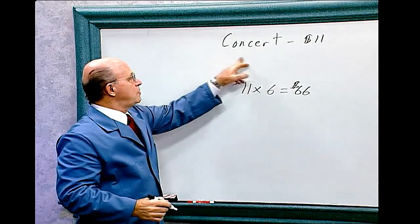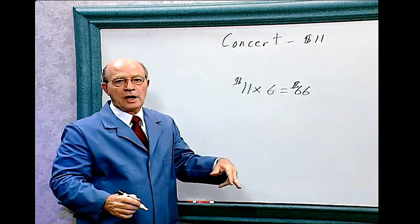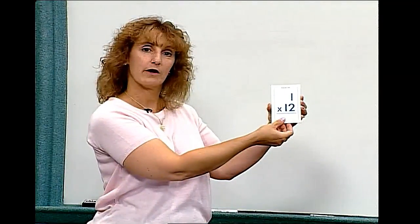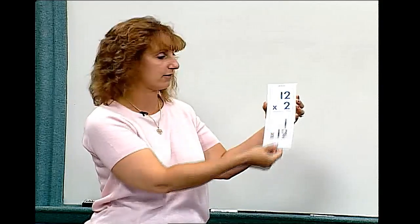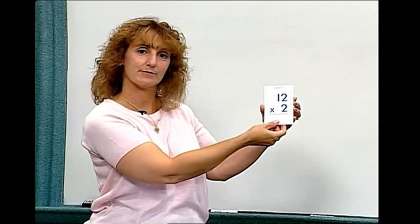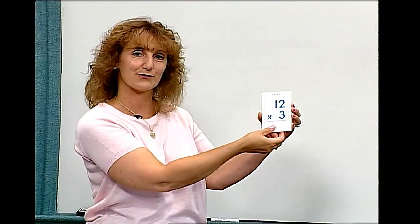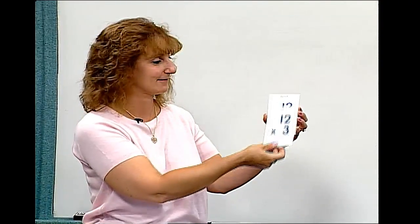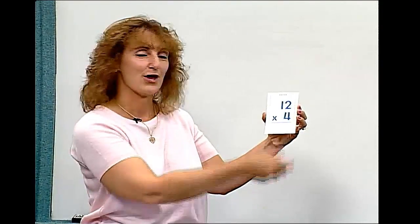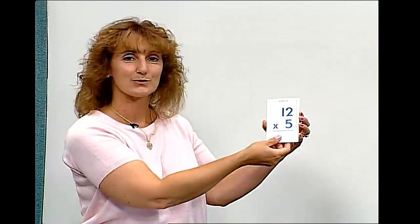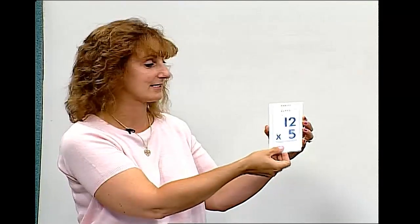So if six of you attended this concert, you had to pay $66. Now let's practice our 12 times tables. 12 times 1 equals 12. 12 times 2 equals 24. 12 times 3 equals 36. 12 times 4 equals 48. 12 times 5 equals 60.